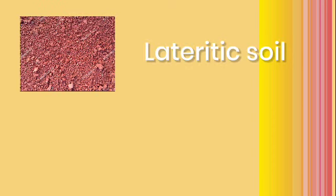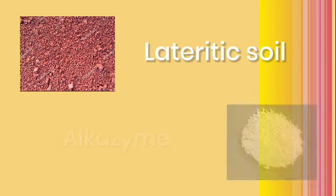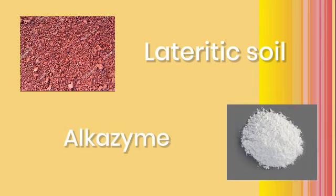The materials we use are lateritic soil, which is rich in iron and aluminium and is formed in hot and wet tropical areas of the country. It is usually poor in lime, potash, and magnesium content. The second material is Alkazim, which is a white color powder that improves the strength and durability of soil.